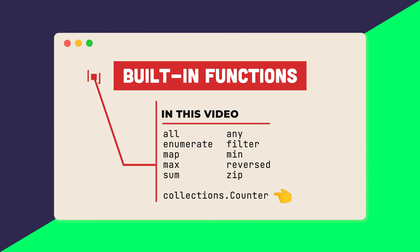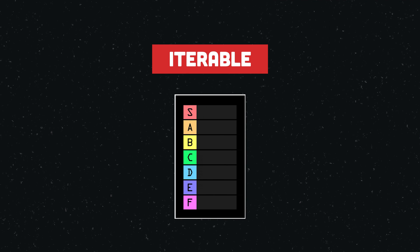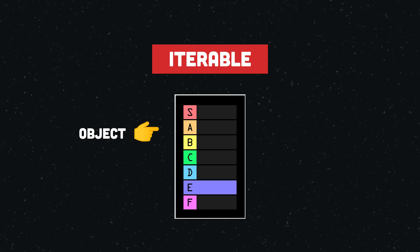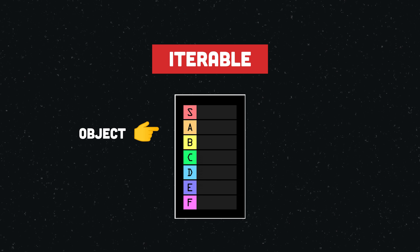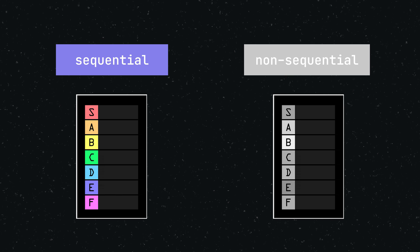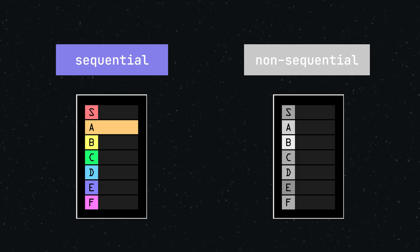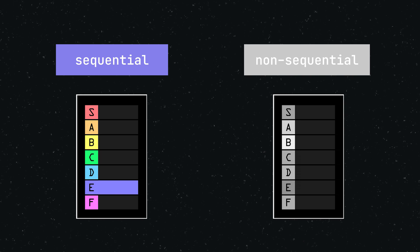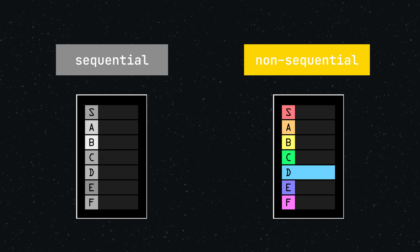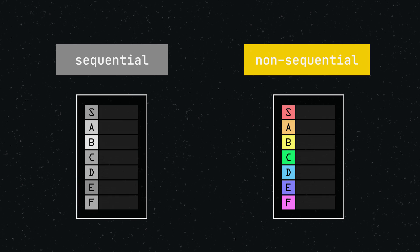Before we go over all the functions, let me briefly explain what the term iterable means in Python. An iterable is any Python object that is capable of returning its members one at a time, permitting it to be iterated over in a loop. There are sequential iterables that arrange items in a specific order, such as lists, tuples, strings and dictionaries. There are also non-sequential collections that are iterables — for example, a set is an iterable despite lacking any specific order.